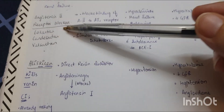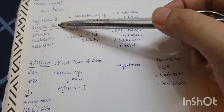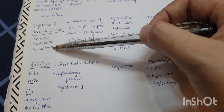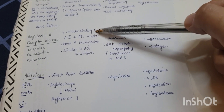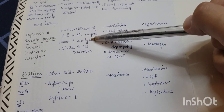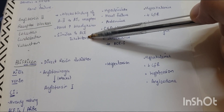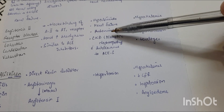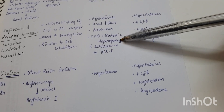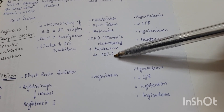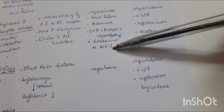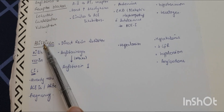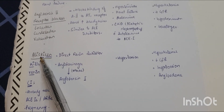ARBs — angiotensin 2 receptor blockers — include losartan, candesartan, and valsartan. Their mechanism blocks binding of angiotensin 2 to angiotensin 1 receptors and does not increase bradykinin; the rest is similar to ACE inhibitors. Clinical uses include hypertension, heart failure, proteinuria, and chronic kidney disease such as diabetic nephropathy, particularly with intolerance to ACE inhibitors. Adverse effects include hyperkalemia, decreased GFR, hypotension, and teratogenicity.